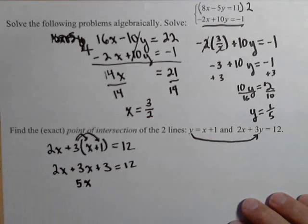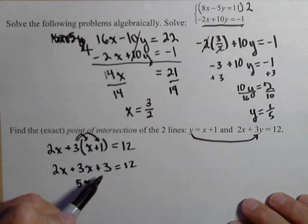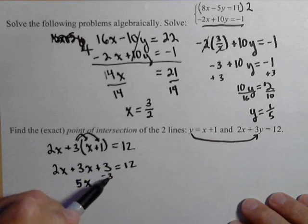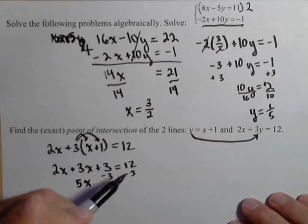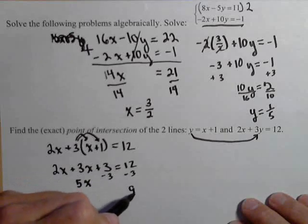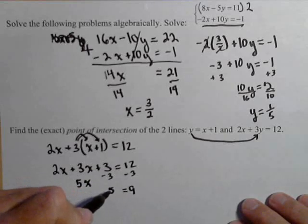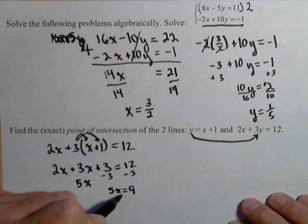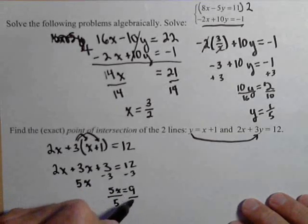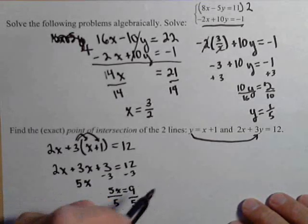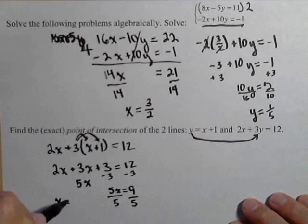So we can combine the x's. We get 5x. Let's go ahead and move this three to the other side. So subtracting three from both sides, we get nine. So 5x equals nine. Dividing both sides by five, we end up with x equals nine fifths.